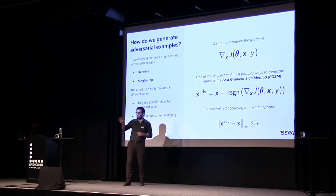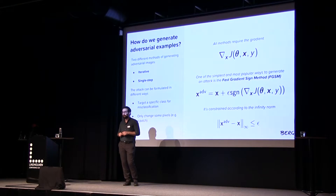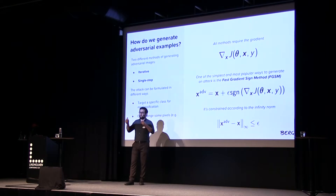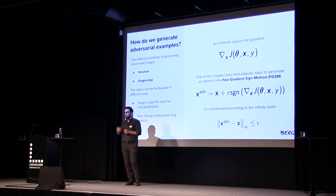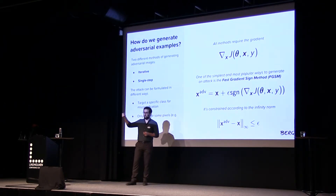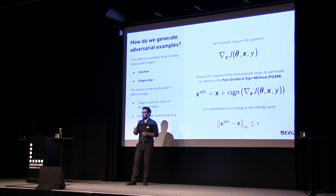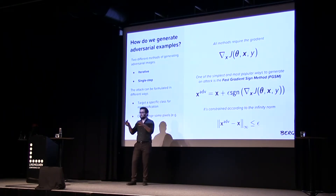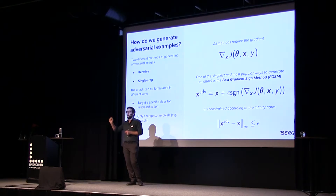One of the simplest and most popular methods is the Fast Gradient Sign Method. You take your input image, compute the gradient for every pixel and every channel, then take the sign of the gradient — positive becomes 1, negative becomes -1. This tells you whether to add or subtract epsilon from each pixel. Epsilon is essentially how much budget can be used to corrupt the image.